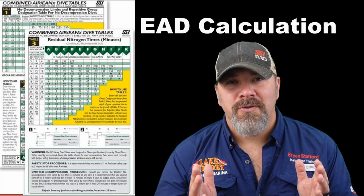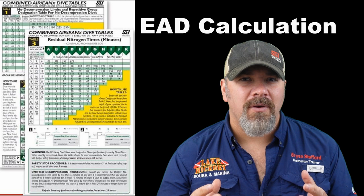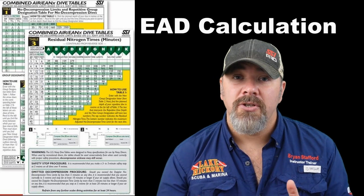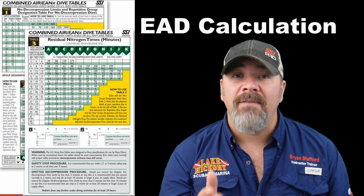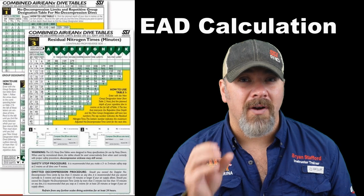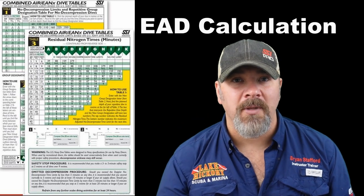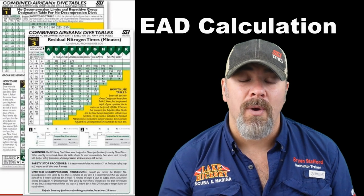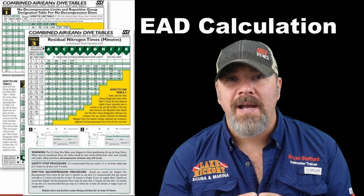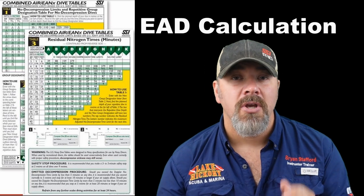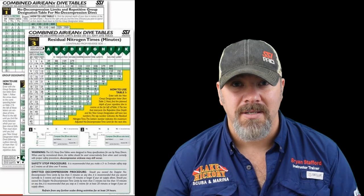A cool fun fact about the SSI nitrox tables: they have 21, 32, and 36 built in. But did you know you could still use the SSI dive tables in standard 21 mode for any nitrox blend? We have what's called the Equivalent Air Depth (EAD) formula, which converts any blend to 21 so you can use the 21 column with any blend. If your computer isn't working and you have nitrox, you can use the EAD formula and still make a dive using the 21 column.